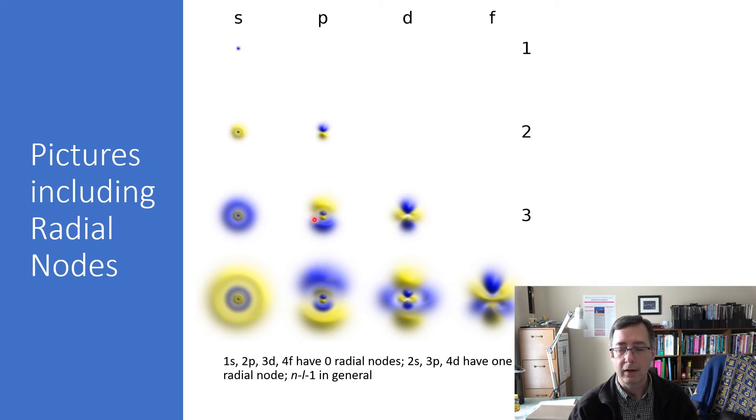And then if I look at a 4p, I get a second radial node. I get the first one I already saw here, which is here now. And then I get a second one that's out a little further. So you can see the pattern is the same. Every time I go up in n, I get another radial node. But for p's, I don't get the first one until principal quantum number three. Whereas for s's, I get the first one at principal quantum number two.